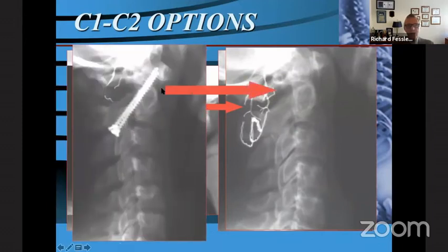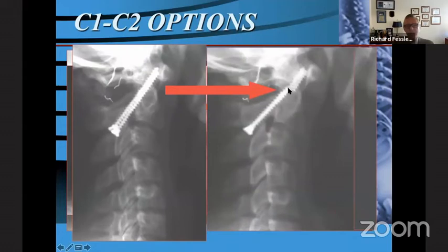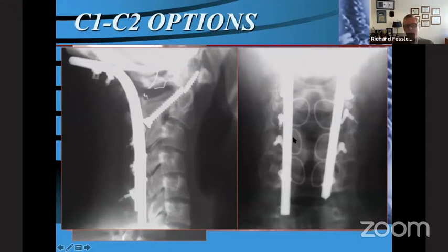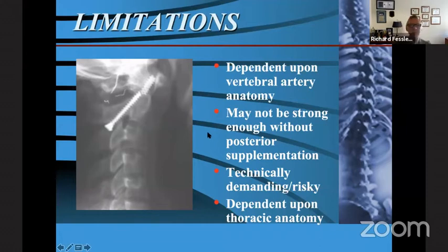They took him back to surgery and did C1-C2 interfacet screws — this is a big husky guy with a strong neck, and he fractured both screws very quickly. He ultimately ended up getting multi-level occipital-cervical stabilization using a bent rectangle and multiple-level cables. In my opinion, this is a patient who should not have had any surgery in the first place, and this young man ultimately ended up with complete loss of motion of his cervical spine. Limitations of C1-C2 facet screws: depending on the vertebral artery, you may or may not be able to do it; it may not be strong enough without posterior supplementation; it's technically demanding; it's somewhat risky because of the vertebral artery; and it depends on thoracic anatomy.